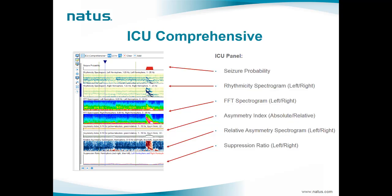The ICU comprehensive template, or panel, is the default panel used in NeuroWorks. The panel is composed of six trends: seizure probability; rhythmicity spectrogram for left and right hemispheres; FFT spectrogram for left and right hemispheres; asymmetry index — absolute and relative — with asymmetry spectrogram for left and right hemispheres; and suppression ratio for left and right hemispheres. Users are able to add more trends to the current panel by clicking the Add button in the main menu.